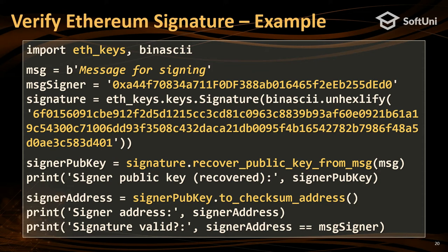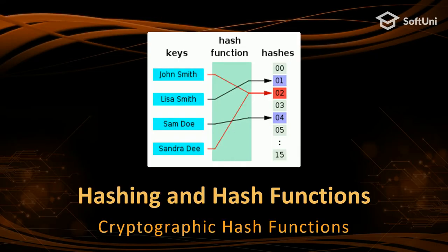If the blockchain address of the message signer matches the address who claims to have signed the message, it's correct. So from a signature you can extract the blockchain address of the person who made it.